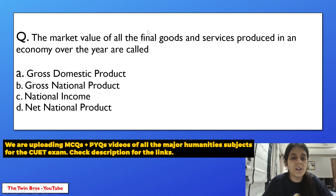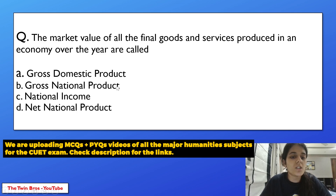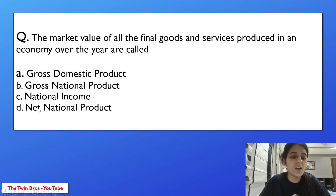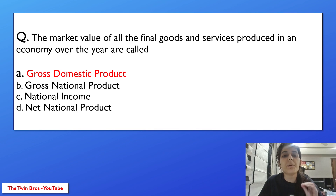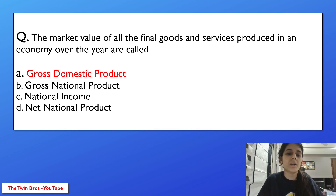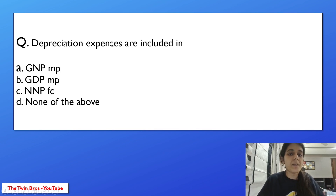The market value of all the final goods and services produced in an economy over a year is called — gross domestic product, gross national product, national income, or net national product? The answer is GDP, gross domestic product, option A.